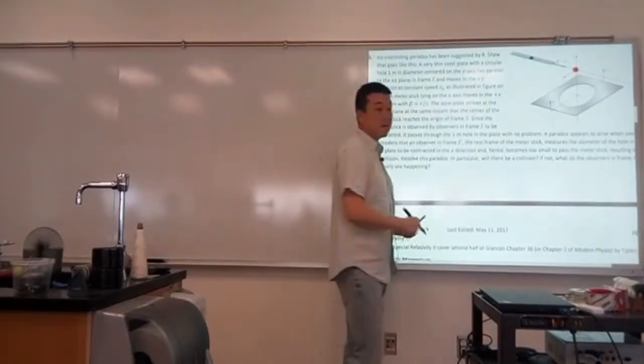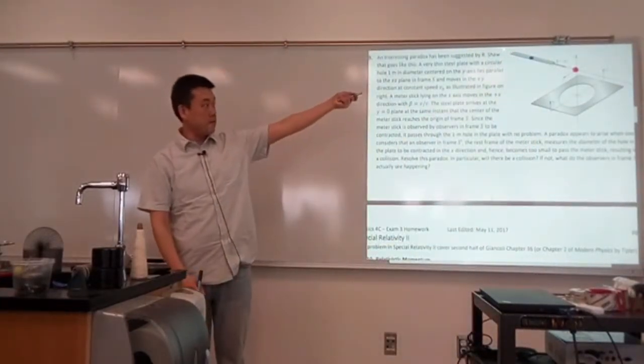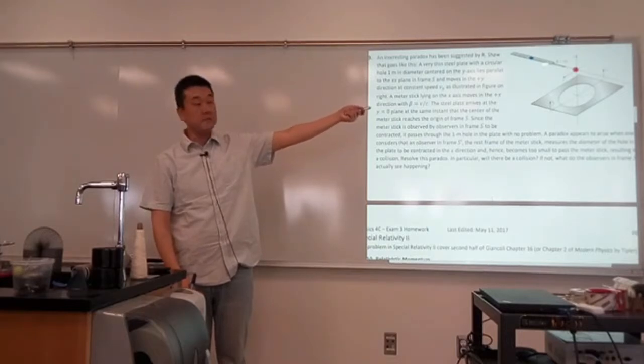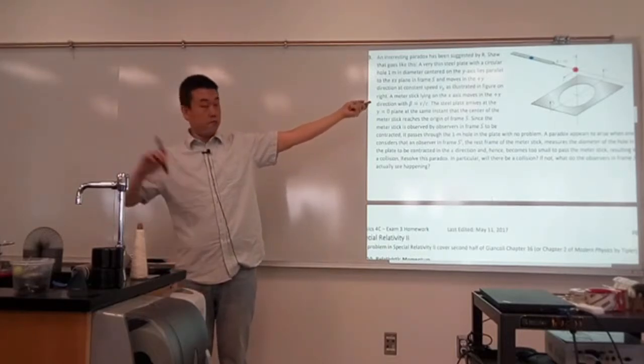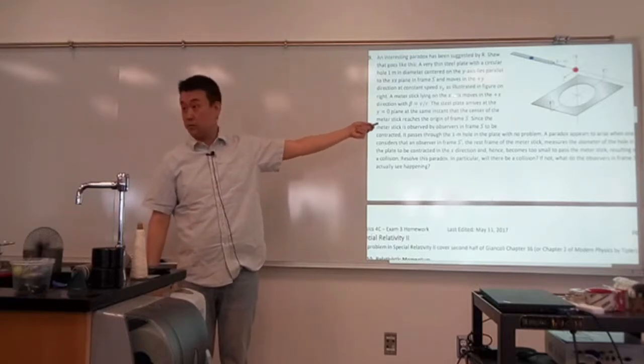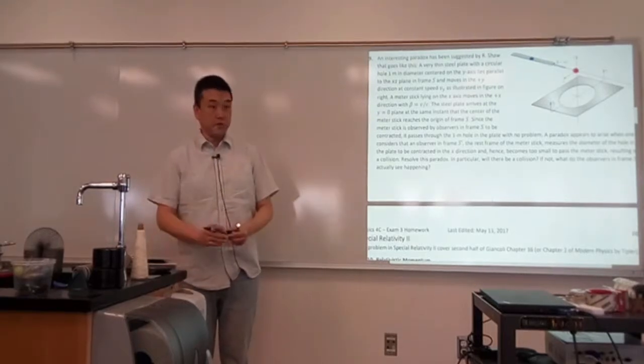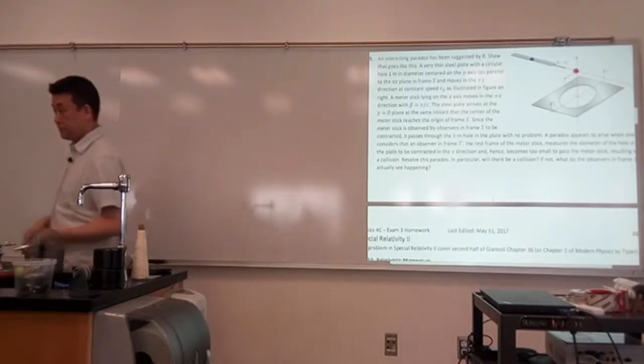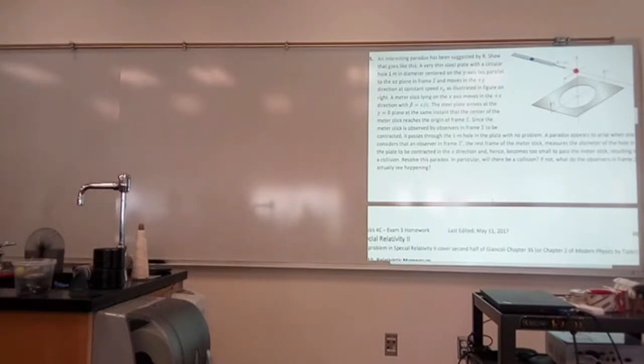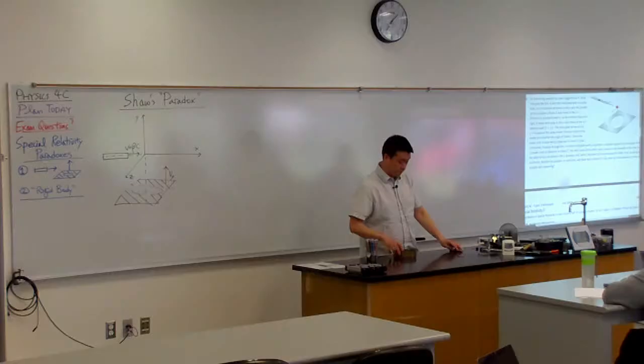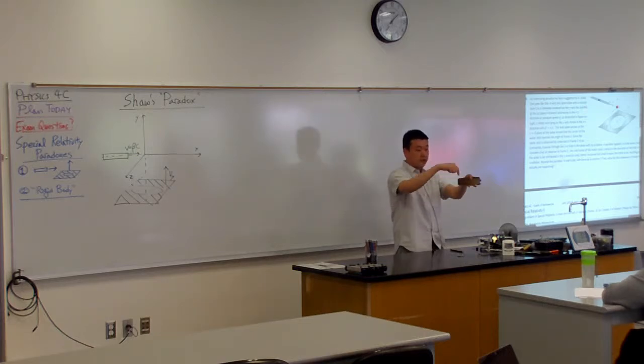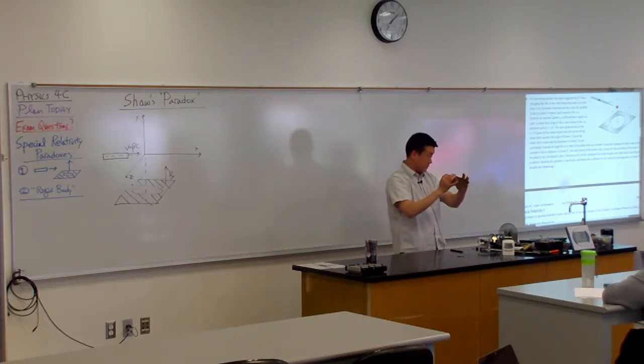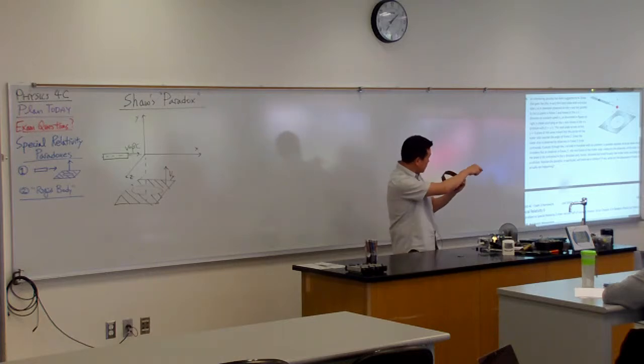So for that person, the ruler is not a moving ruler. Ruler didn't contract. What contracts instead? But no, it's not simultaneous. I know, I know. We are getting there. But what contracts? No, this hole contracts. So it'll actually look more like an ellipse. It'll look more like an ellipse. So, and that's how the hole is seen in this reference frame.